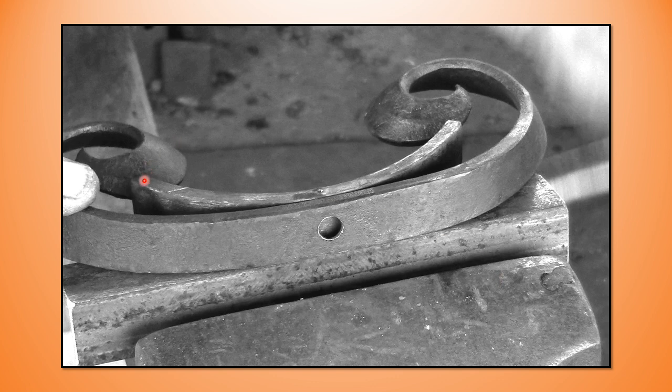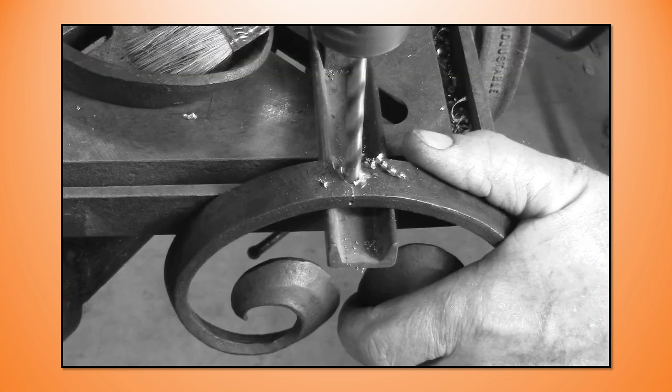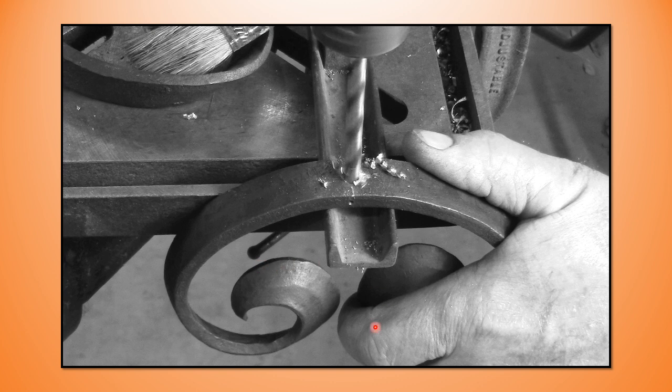And then the last thing for me when I'm trying to get these things together is I have a little scroll form and that really helps me find centre on this scroll. Otherwise you can be chasing these C scrolls around for an age. On the other C scroll you can see that that is fully formed or turned and then I'm going to drill for a tap size for my 5/16 bolt. And I think that's an F size drill for me. A quarter inch if you don't have that sort of drill index.